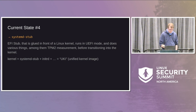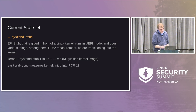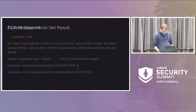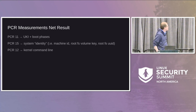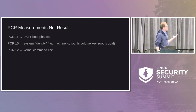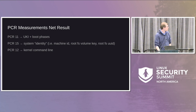The kernel systemd-stub, initrd — what we call the UKI — measures into PCR 11. It also measures the used kernel command line into PCR 12, encoding the parameterization of the system. To summarize: PCR 11 contains the measurement of the UKI components and boot phases; PCR 15 is the SystemD system identity; PCR 12 is the kernel command line. You can build complex policies out of this for TPM objects of your choice.